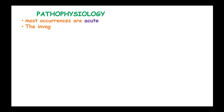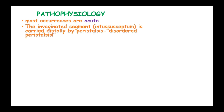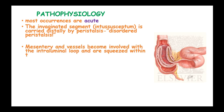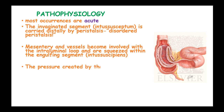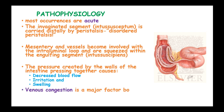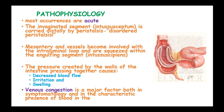The pathophysiology of intussusception: most cases are acute, and the invaginated segment known as the intussusceptum is carried distally by peristalsis, which is disordered. The mesentery and vessels become involved with the intramural loop and are squeezed within the engulfing segment known as the intussuscipiens. The pressure created by the walls pressing together causes decreased blood flow, irritation, and swelling. Venous congestion is a major factor both in the symptomatology and in the characteristic presence of blood in stool.